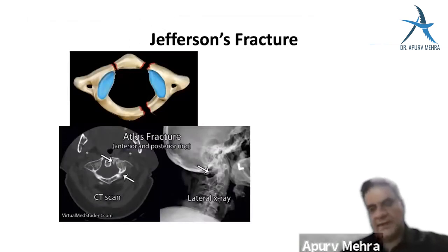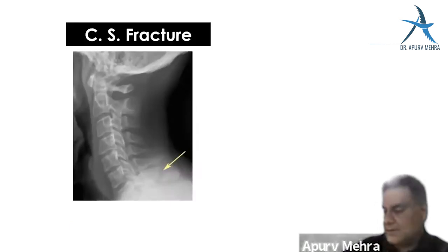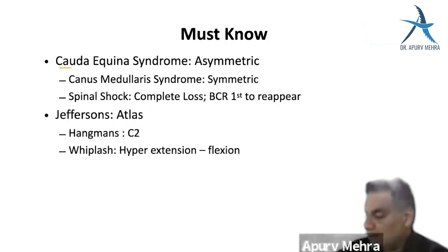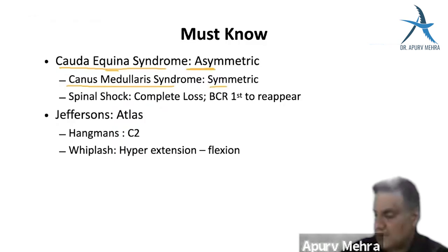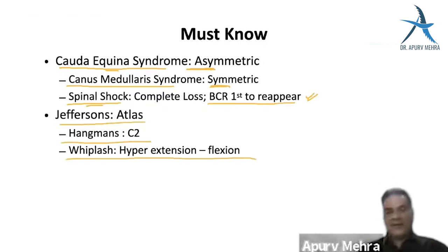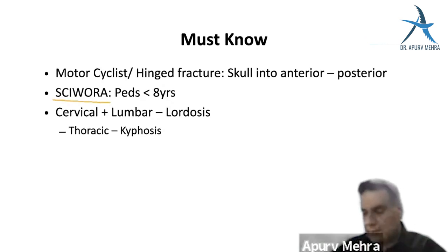Spine injuries: Jefferson's fracture — fracture of C1 (atlas), not associated with high mortality. Hangman's fracture — C2. Whiplash — hyperextension-flexion injury. Cauda equina injury: asymmetrical motor and sensory loss. Conus medullaris: symmetrical motor and sensory loss. Spinal shock: complete loss after spine injury; bulbocavernosus reflex is the first to reappear at the end of spinal shock. Pediatric cervical spine: SCIWORA (spinal cord injury without obvious radiological abnormality) seen in children under 8 years. Cervical and lumbar curves are lordotic; thoracic is kyphotic.